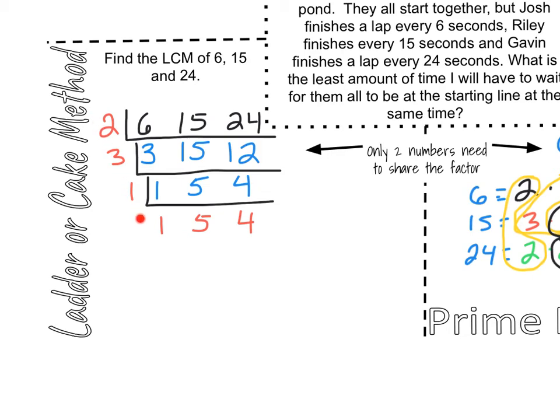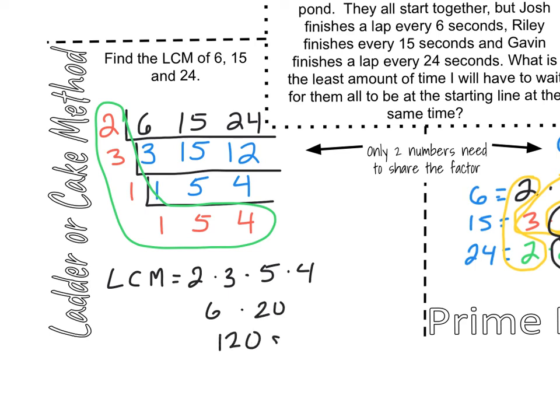Greatest common factor, we only focused on the numbers out here. Kind of like over with the prime factorization, we have to include the leftovers. Because we're doing multiples, we have to include all factors of our numbers. So here, we're going to also include those. What I like to remind students to do is we're going to make an L for least common multiple. So now my least common multiple is going to be 2 times 3. You can include the 1s if you want, but remember they're not going to change the value. Times 5 times 4. So here, I could simplify this as 6 times 20. And 6 times 20, once again, would be 120 seconds.